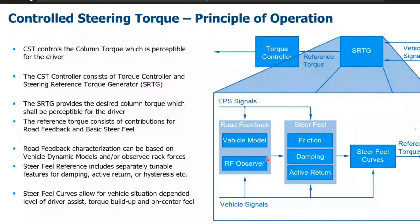If you instead use a vehicle model — like from a lecture book — which is basically fed with steering angle and vehicle velocity and has some parameters like weight or inertia of the vehicle, you would generate a pretty disconnected steer feel. You would have only the basic force coming from the front tires to allow for cornering, cancelling out all the noise and information coming from the road.